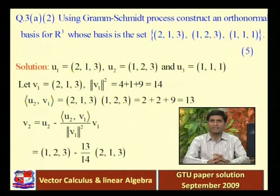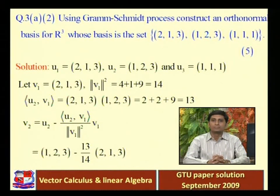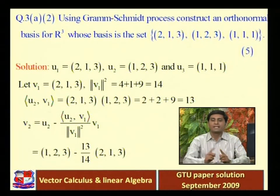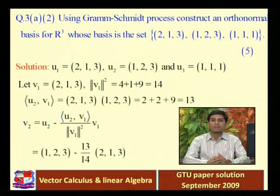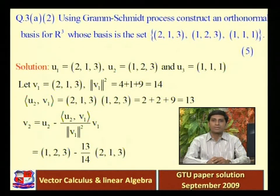Here we are using the standard dot product as our inner product. An orthogonal set of vectors means the dot product of any two vectors equals zero. If this condition is satisfied, then we can say our set of vectors is an orthogonal set. But here we have to convert into orthonormal basis vectors.